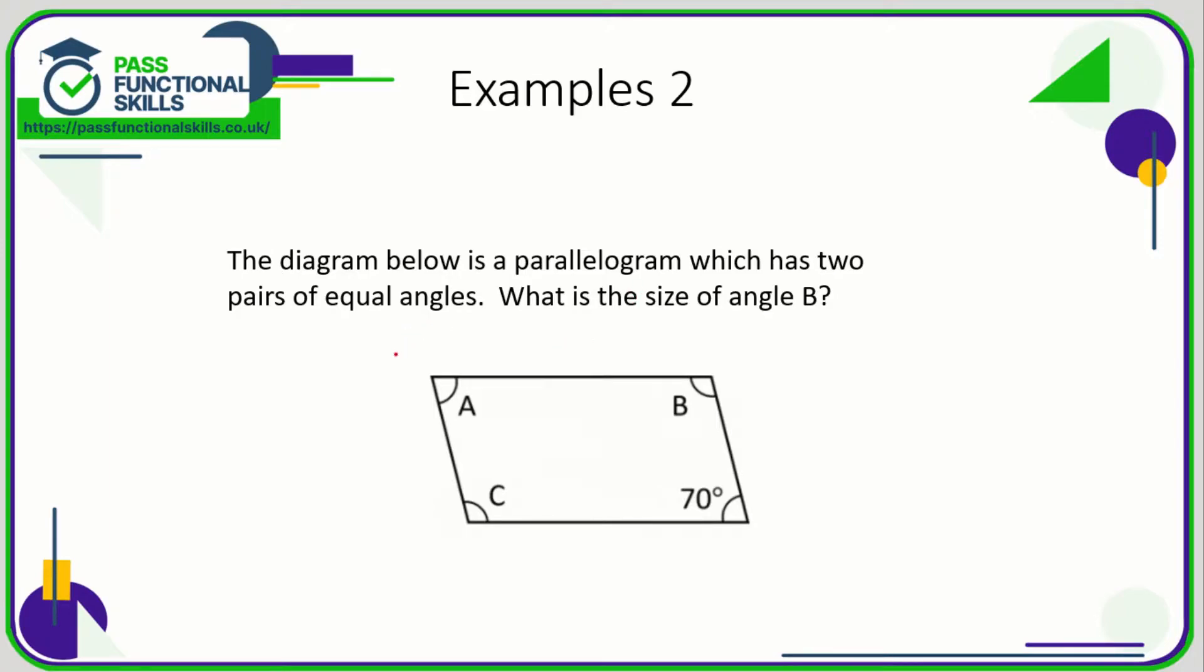Okay, let's take a look at this next example. The diagram below is a parallelogram which has two pairs of equal angles. What is the size of angle B? The pairs of angles are A and 70 are the same, and C and B are the same.